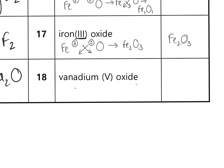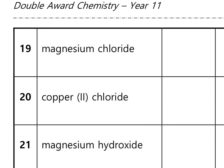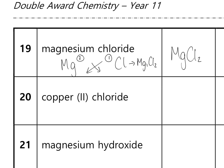Vanadium(V) oxide: vanadium is V with a valency of five (from the Roman numeral V in brackets); oxygen has a valency of two. Swap and drop gives V₂O₅. Magnesium chloride: Mg (group two, valency two) and Cl (group seven, valency one) — swap and drop gives MgCl₂. Copper(II) chloride: Cu (valency two from brackets) and Cl (valency one) — swap and drop gives CuCl₂.